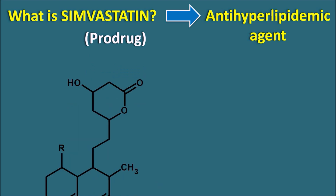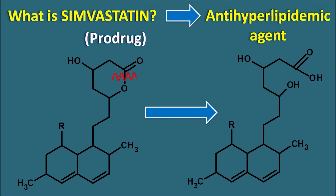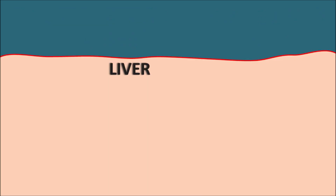This drug has a structure with a lactone ring system. Simvastatin undergoes hydrolysis such that this lactone ring is opened and it produces an active metabolite — the beta-hydroxy heptenoic acid — which is responsible for the pharmacological action of simvastatin. Now let us look at the mechanism of action of simvastatin. Simvastatin mainly inhibits the biosynthesis of cholesterol within the liver.